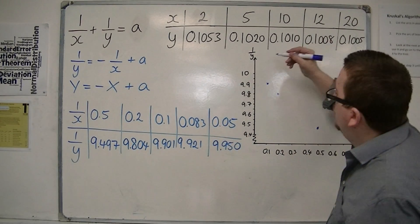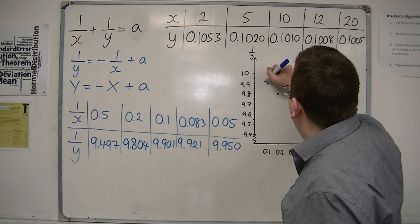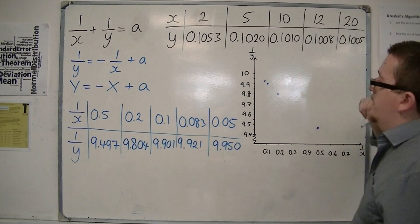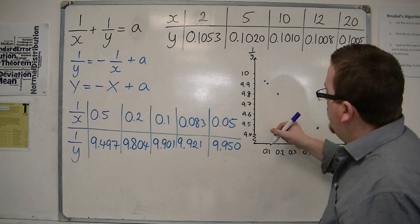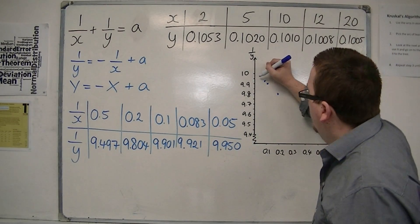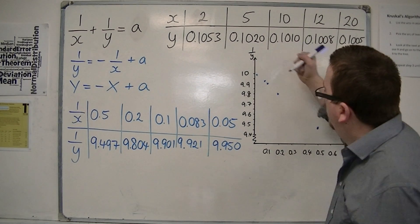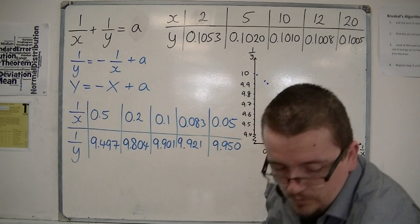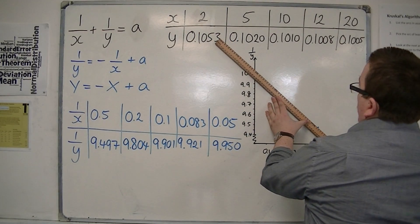And then 0.083, 9.92, so it's probably just to the left of it, just above, so probably something like that. And then 0.05, 9.950, so that would be close to being up here somewhere. And then we can draw a nice, straight line through what we have, or try to.